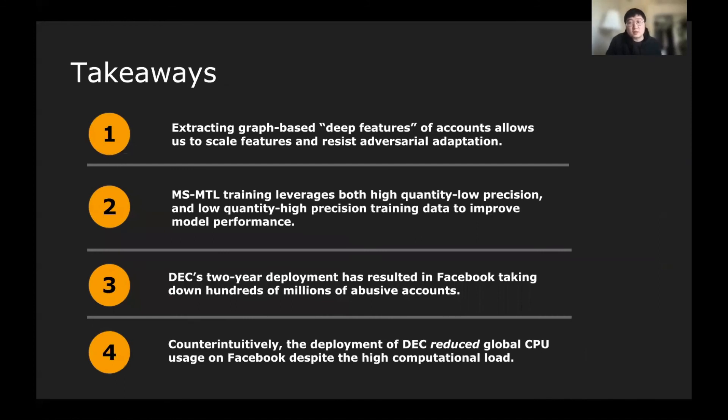Thanks for listening to the talk. Here are a few takeaways from the talk. On the feature-wise, the DEC system extracts the graph-based deep features from accounts. It allows us to scale features and resist adversary adoption. On the architecture-wise, to leverage both the automated data and the human-label data, we apply a multi-stage and multi-task learning. And jointly, this architecture and the graph-based deep features improve the model performance. Thirdly, because of DEC's two-year deployment before the paper was published, it has resulted in Facebook taking down hundreds of millions of abusive accounts over the past few years. Lastly, which is also the most interesting part, counter-intuitively, the deployment of DEC reduced the global CPU usage on Facebook, despite the high computational load. This is because of DEC, we are able to take down so many abusive accounts. This actually significantly reduces the CPU that is spent on such abusive account activities on the platform.